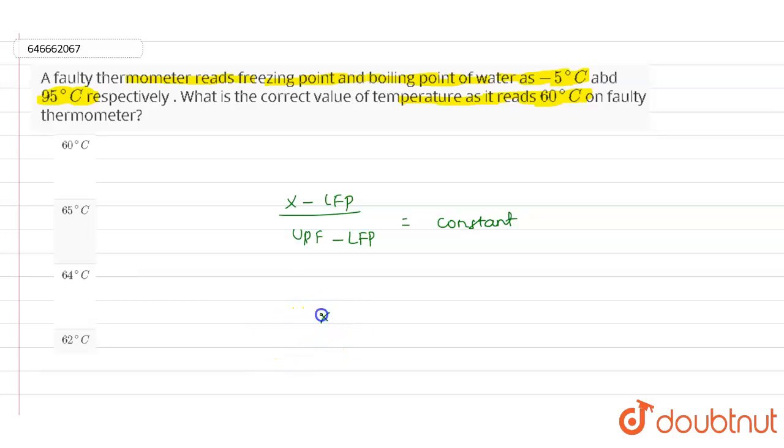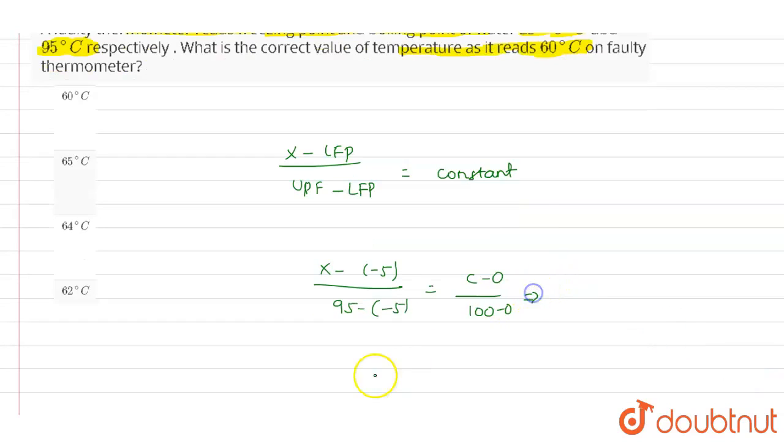According to that we will write x minus of minus 5 divided by 95 minus of minus 5. That will be equals to C minus zero divided by 100 minus zero.